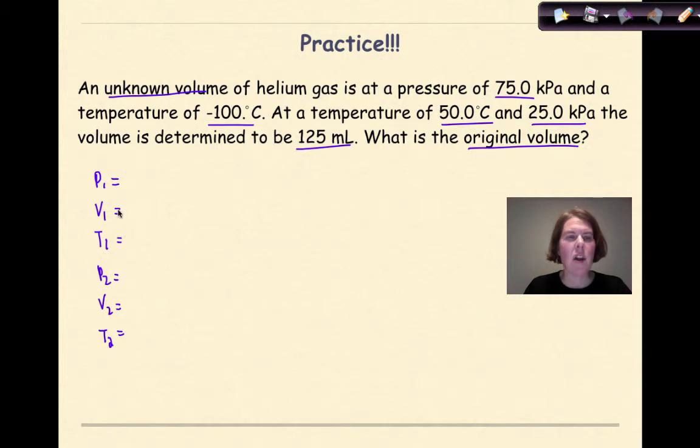An unknown volume of helium gas, so my V1 is going to be my X, is at a pressure of 75 KPA. My P1 is 75 KPA, and a temperature of negative 100 degrees Celsius. So negative 100 degrees Celsius, which we need to convert into Kelvin, plus 273, which gives me 173 Kelvin. At a temperature of 50 degrees Celsius, 50 degrees Celsius, plus 273, gives me 323 Kelvin. And 25 KPA, so P2 is 25 KPA. The volume is determined to be 125 milliliters. What is the original volume?